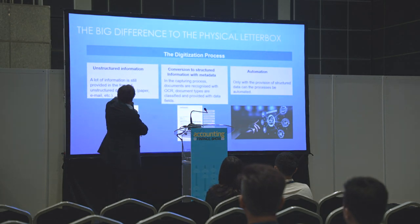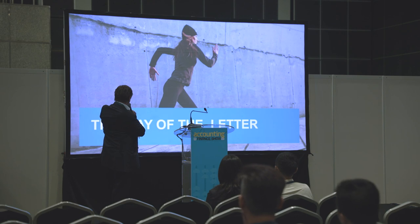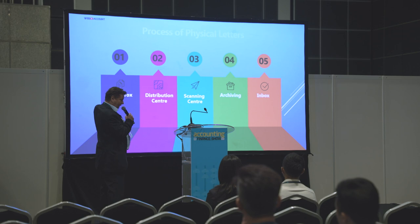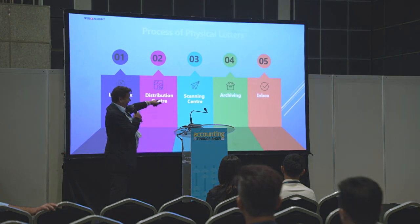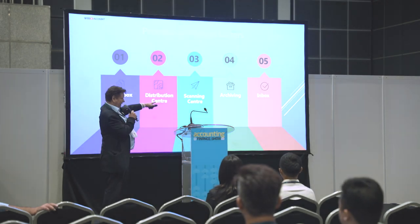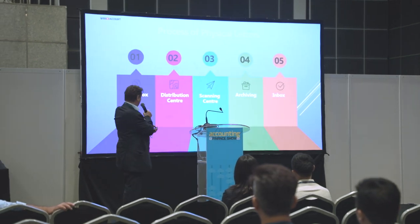The big difference of the physical letterbox is the conversion from unstructured information to structured information with metadata and automation. It comes in via the letterbox, goes into the distribution center with many processes behind, then into the scanning center where we do the archiving, and finally the physical letter is digitized in the inbox — it looks like an email, which Rene will show afterwards.